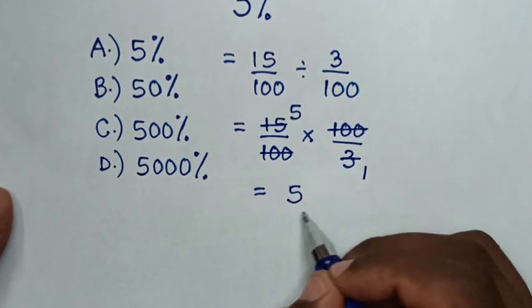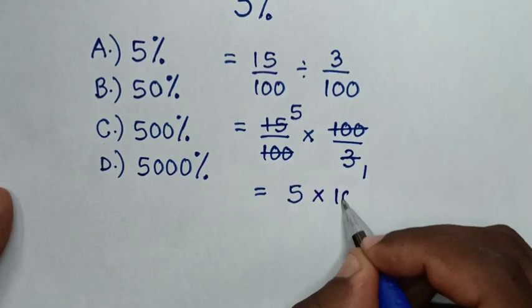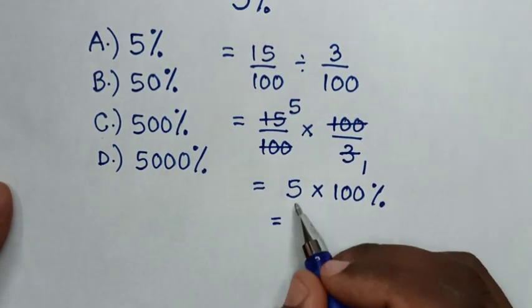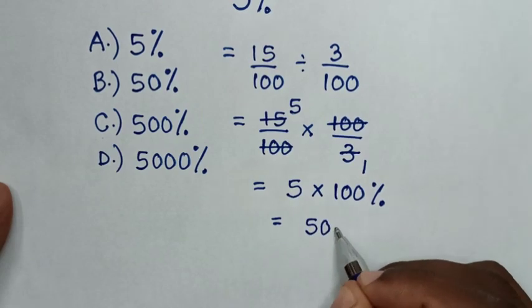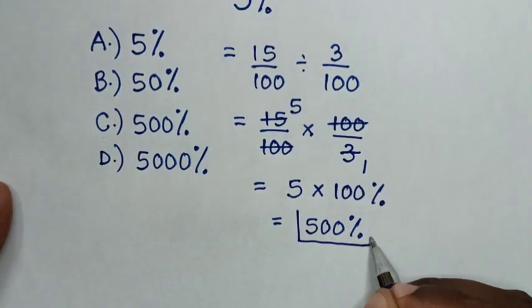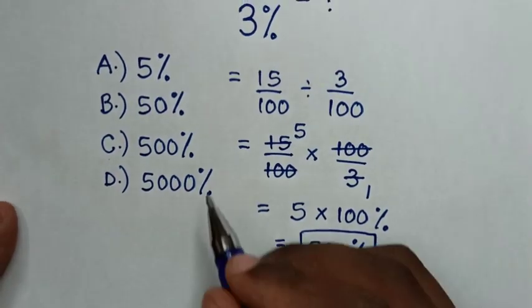But this 5 is in real number and our answers are in percent, so we multiply by 100%. Then it will be equal to 500%. So this is our final answer. To select in the multiple choice, it is C.